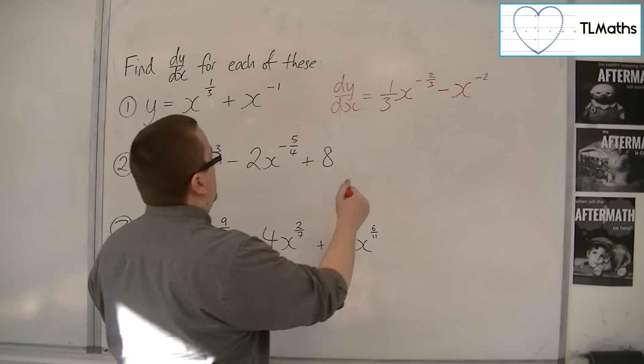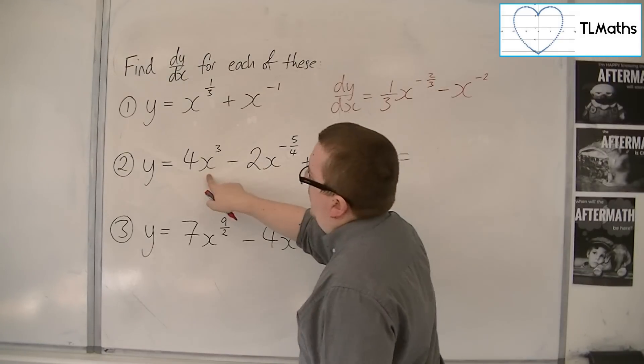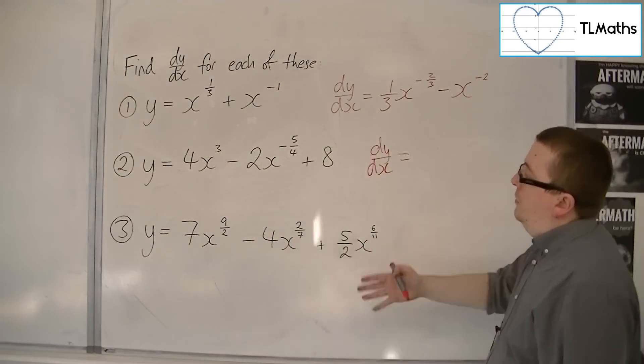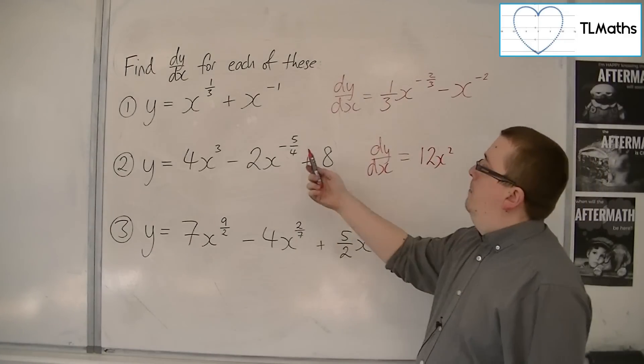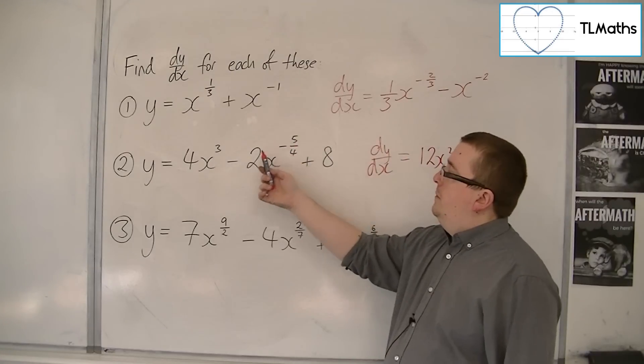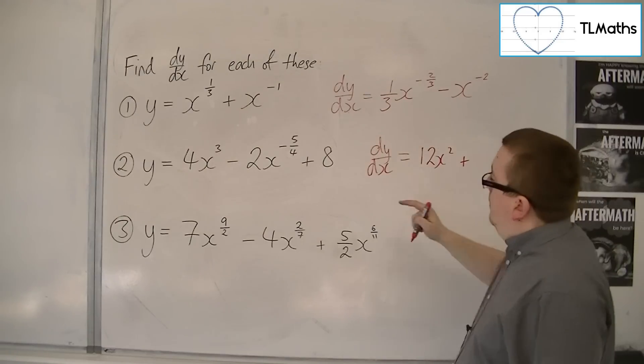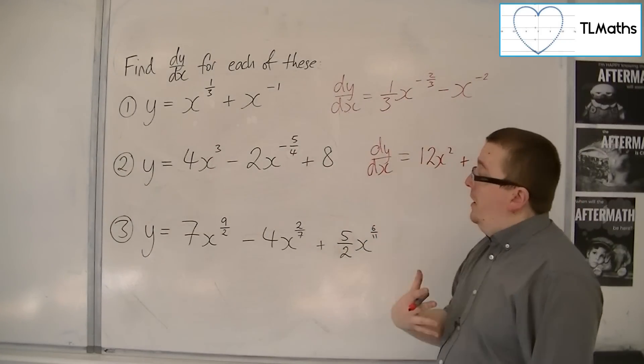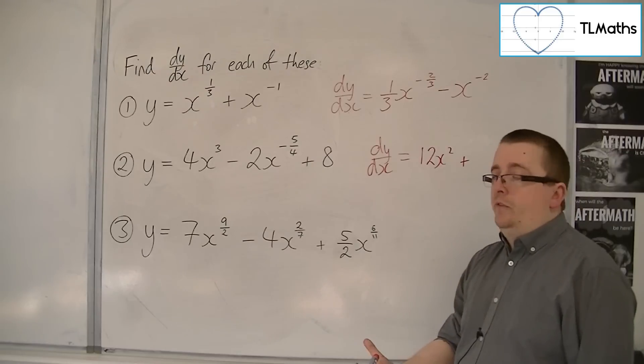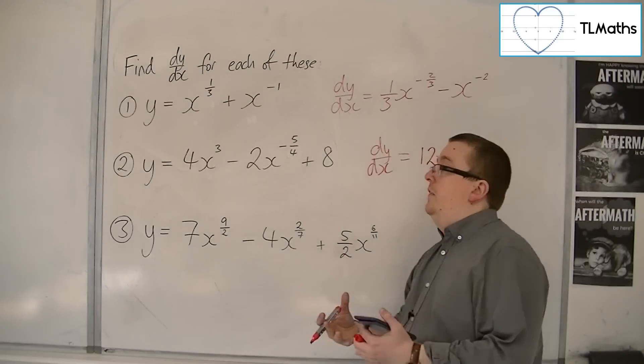For number two, dy/dx, 4x cubed, well that's a normal one, so we've got 12x squared. Then we've got minus five quarters coming down and multiplying with that minus two. So minus two times minus five quarters is positive, so plus ten quarters. So ten quarters is five halves.